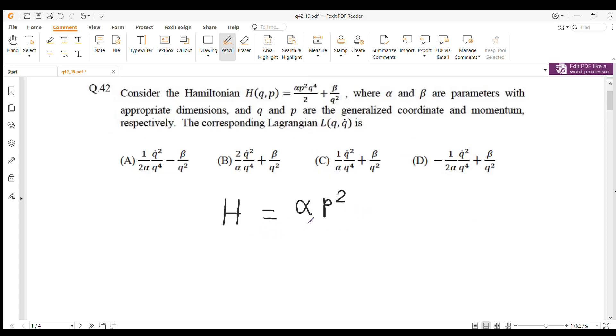In this question we have H equals alpha p squared q to the power 4 by 2 plus beta by q squared.